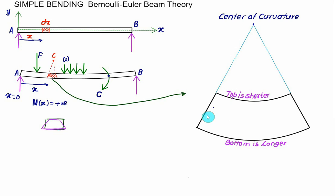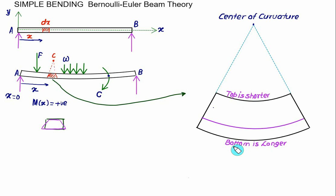Some fiber has no effect from the loading and retains the same original length — meaning somewhere there is no change in length of the given slice. This fiber, whose location from the top and bottom is a function of the cross-section, passes exactly through the centroid of the cross-section. This is the neutral fiber — the fiber with no change in length.